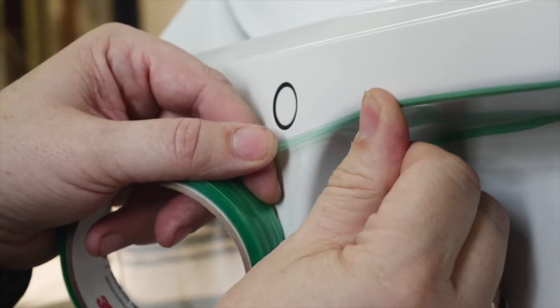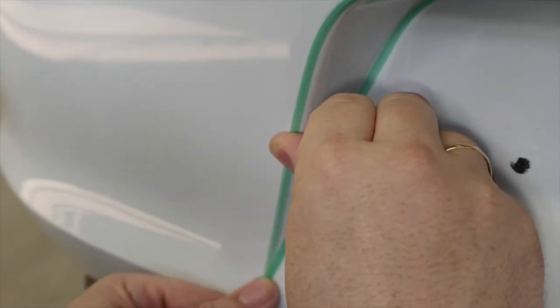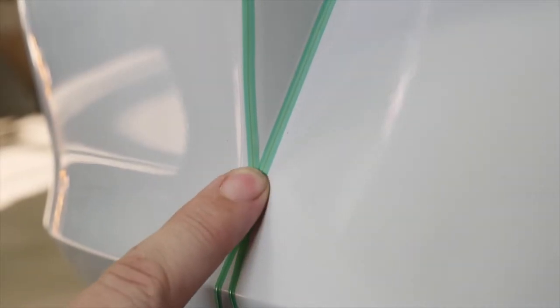Once completed, repeat the process to the outside edge of the recess. It's important that the two lines overlap at the end of the inlay to build a corner.